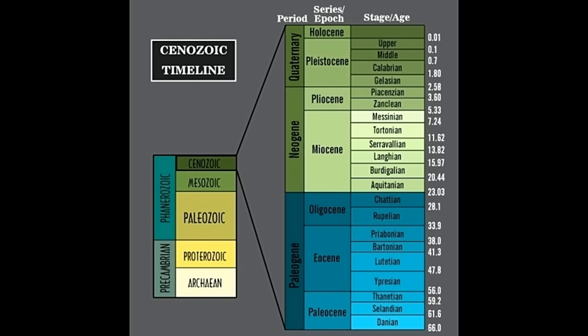The Cenozoic era timeline and periods: based on different factors like the geological and tectonic environment, the Cenozoic era is divided into three periods. Other aspects like climatic factors, arrival of humans, and floral and faunal evolution are also taken into consideration while marking the boundaries between two periods and their epochs. The Cenozoic era consists of the following periods — paleogene, neogene, and quaternary.